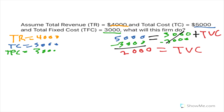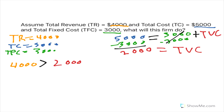We know that the total revenue is $4,000, and we know that the total variable cost is $2,000. Since $4,000 is greater than $2,000, we will tell this business to continue to operate, even though their total cost is greater than their total revenue.